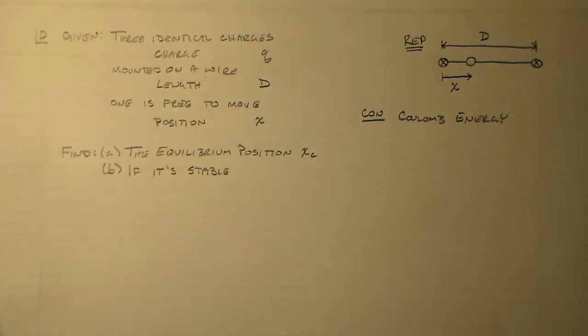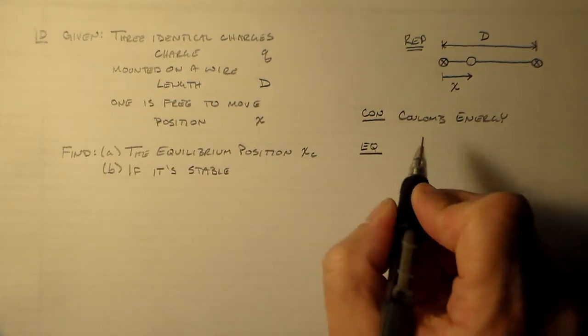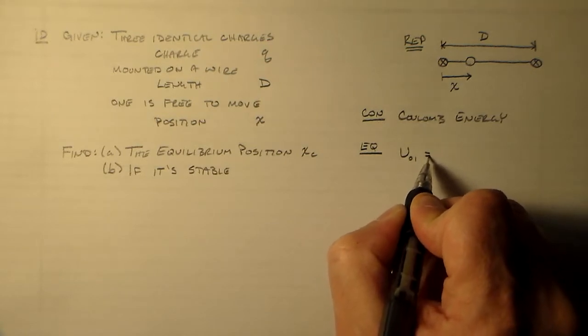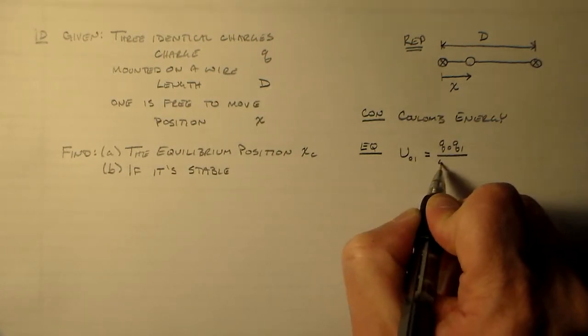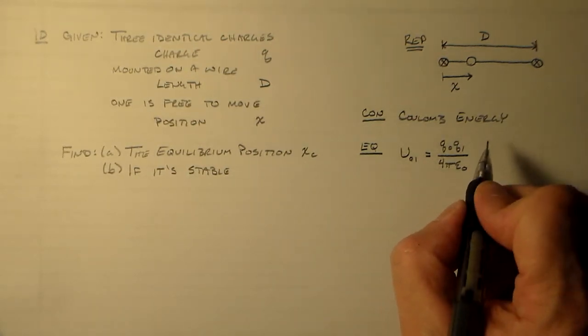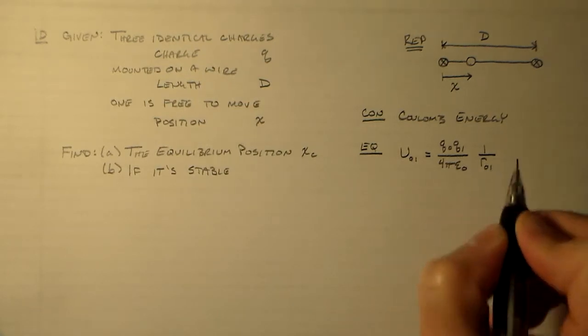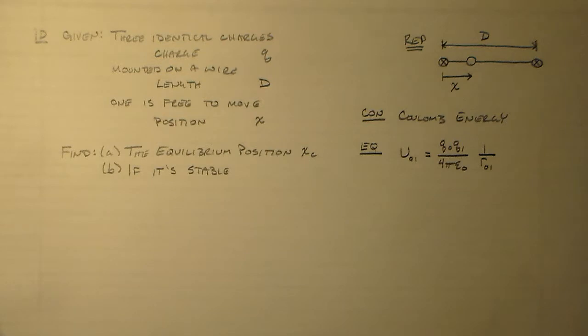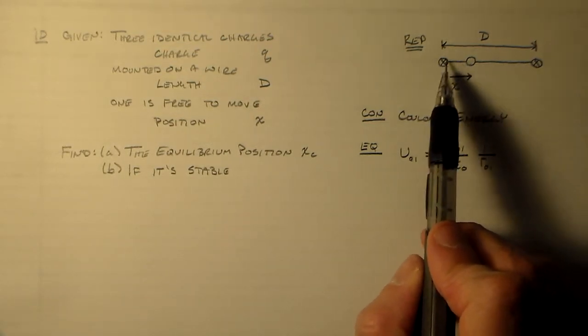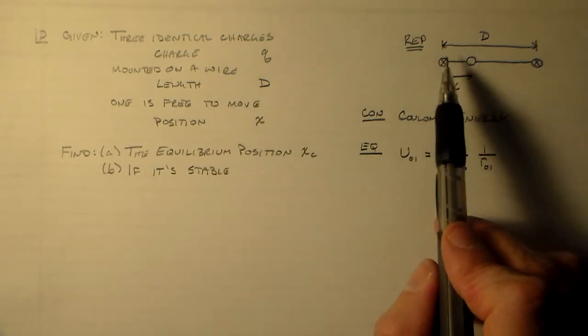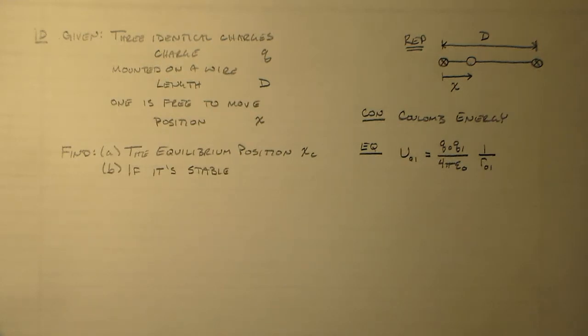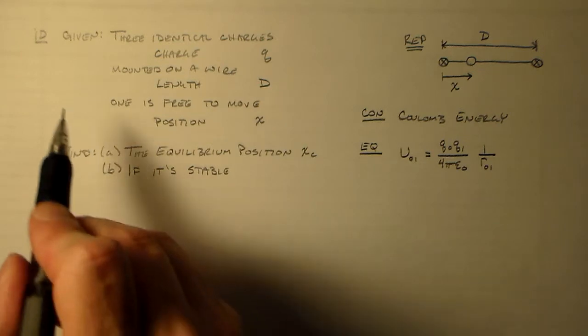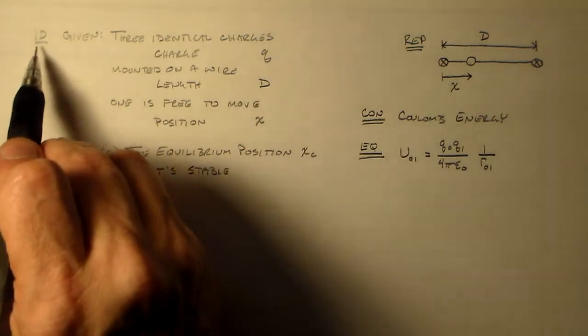And as you recall, the potential energy of a configuration consisting of charges 0 and 1, is equal to Q0 and Q1 over our fun constant that we love, 4 pi epsilon naught, multiplied by the inverse of the distance between the two charges. So that's the configuration energy, the pairwise configuration energy. And you'll notice that we have three of those, between here and here, between here and here, and between here and here. We're not really going to have to worry about these two, though, because we can just use a gauge transformation and say that's part of our zero. So we don't really have to worry about those two.